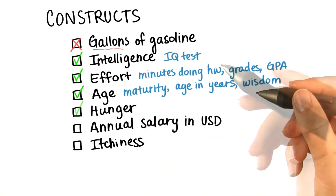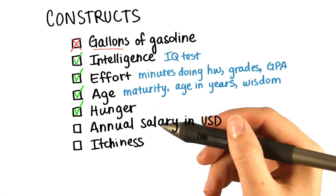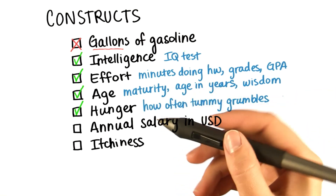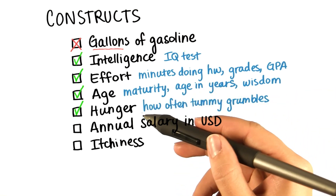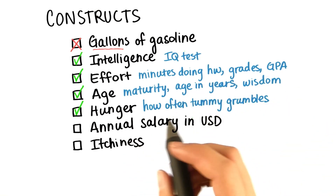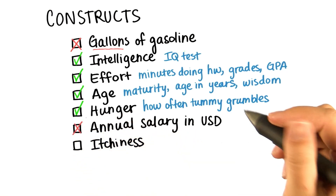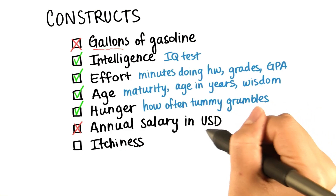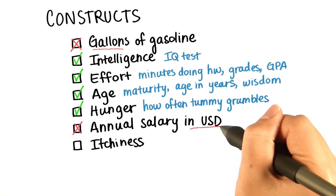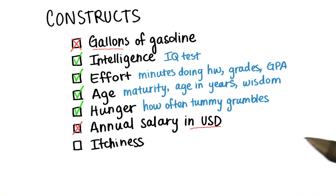Hunger is also a construct. Hunger could be measured by how often your tummy grumbles, or by how deficient in nutrients your body is. Annual salary in US dollars is not a construct, because we put in US dollars, and therefore we have a way of measuring your annual salary.